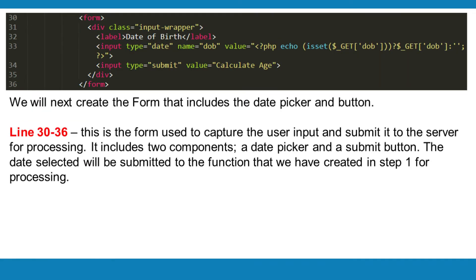We will next create the form that includes the date picker and button. Lines 30 to 36 contain the form used to capture the user input and submit it to the server for processing. It includes two components: a date picker and a submit button. The date selected will be submitted to the function that we created in step 1 for processing.